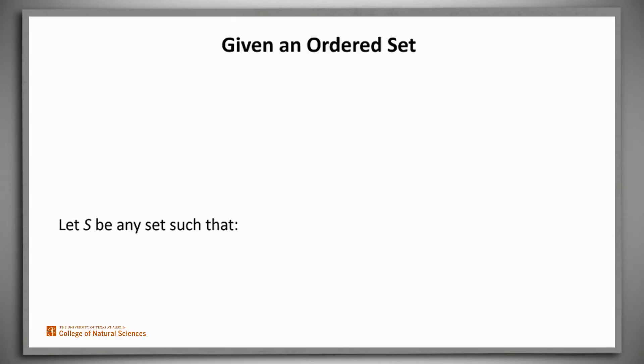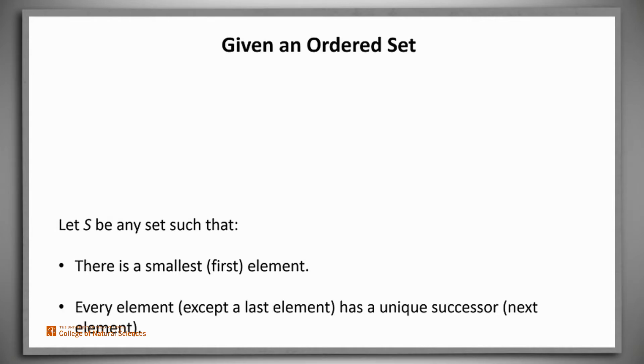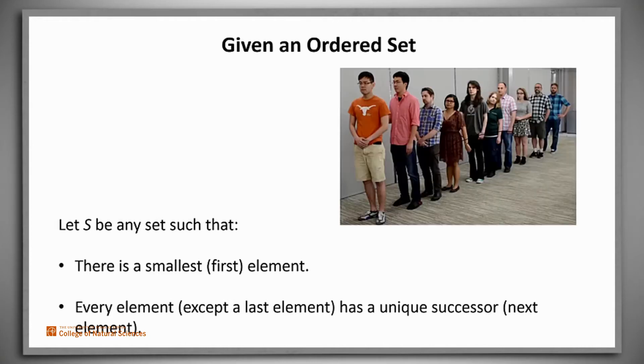More generally, let S be any set of objects that can be arranged in order, such that there is a smallest or first element, and every element except possibly a last one has a unique successor. So for example, our set of students is exactly such a set. There's a first element, and every student except the last has a unique successor.